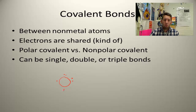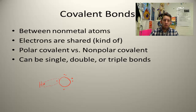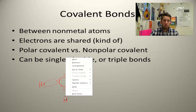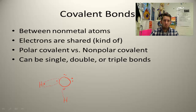Oxygen with six valence electrons isn't happy — two electrons are unpaired and lonely. Hydrogen, with one valence electron, can pair up with oxygen. With two hydrogen atoms, oxygen now has eight electrons in its valence shell and is stable. We form H2O. Since both oxygen and hydrogen are nonmetals, this is a covalent bond.